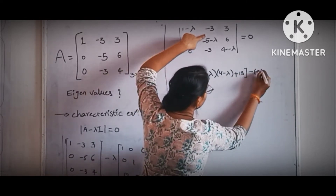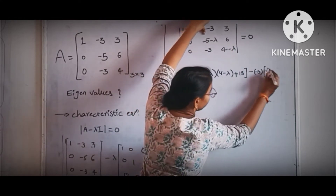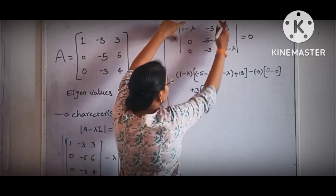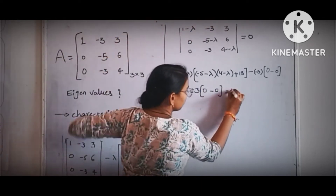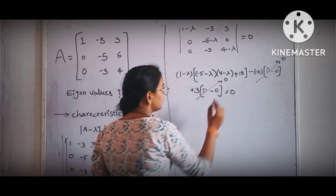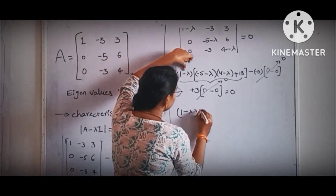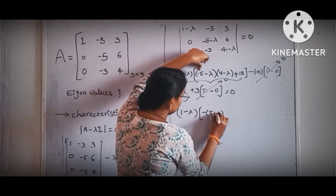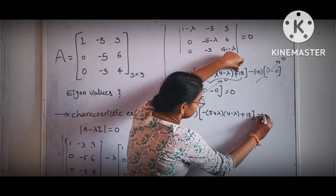Then minus 3 times: 0 times 4 minus lambda minus 0 times 6, which equals 0. And plus 3 times: 0 times something minus 0 times minus 5 minus lambda, also 0. So we can say those terms equal 0 and we are left with 1 minus lambda times, taking minus outside, 5 plus lambda times 4 minus lambda plus 18, equal to 0.